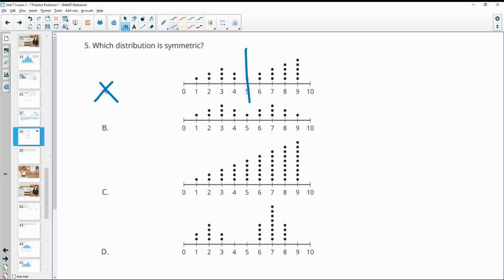If you look here, it appears that there's a middle in this one, right? We have two dots one away, three dots here, then two, then one. So B is symmetric. The others, no.